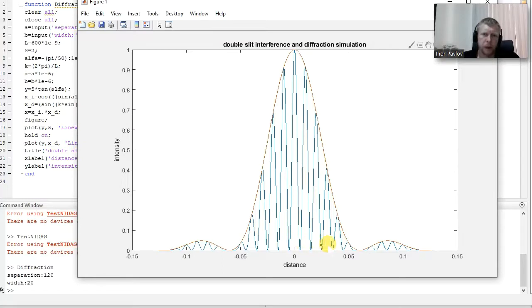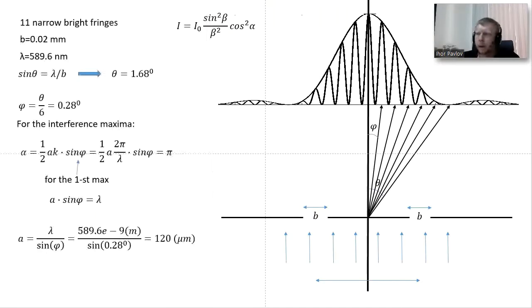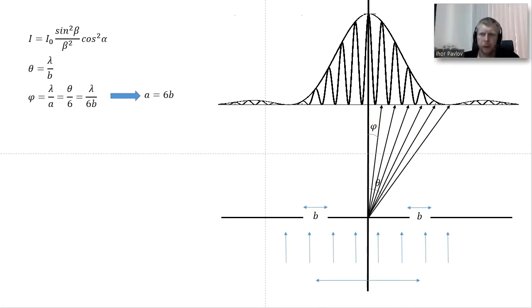We have central maximum, we have five maxima until the sixth one will disappear. The same result, without going to deep consideration of this angle, we could get from very simple considerations. We can say that theta equals lambda over b in the small angle approximation, phi equals lambda over a. From here, since we know that theta over 6 equals phi, the lambdas cancel and a equals 6b.